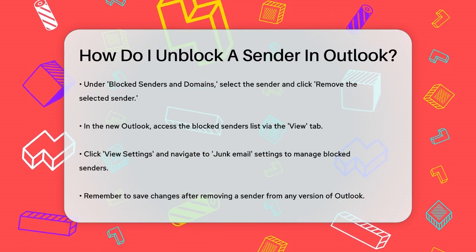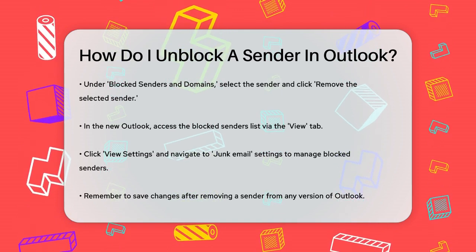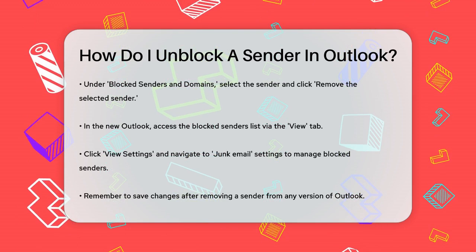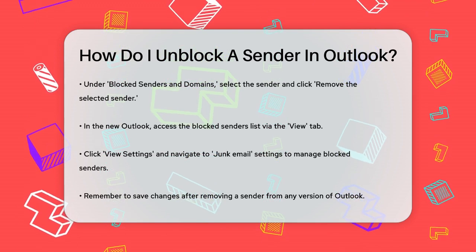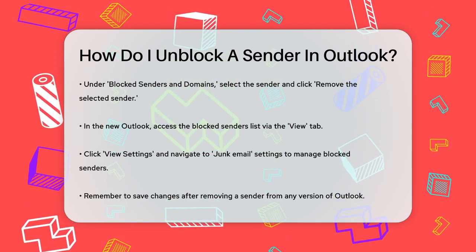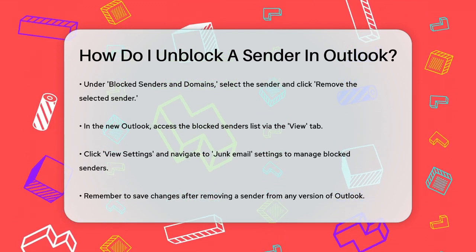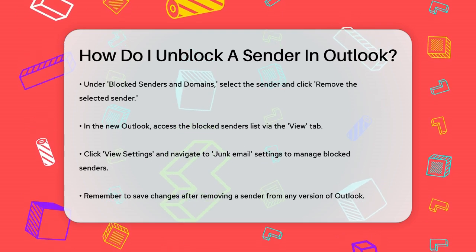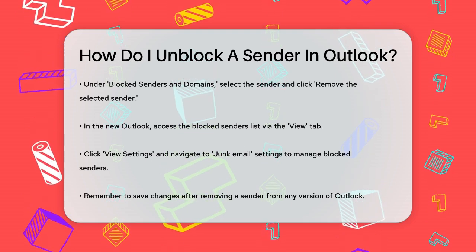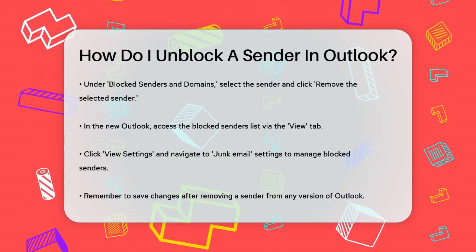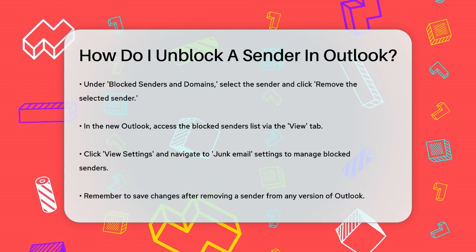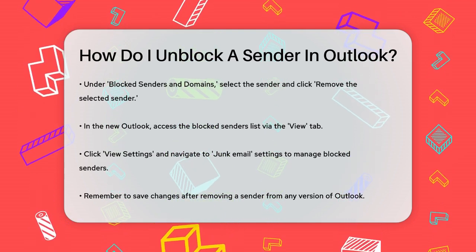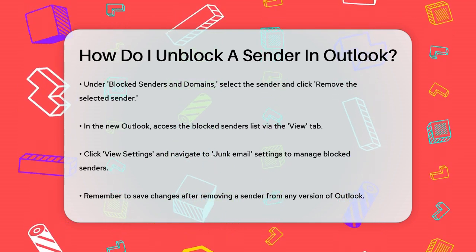Regardless of the version of Outlook you're using, the key is to find the blocked senders list and remove the sender you no longer want to block. This will ensure that their emails are no longer sent to your junk folder and will instead land in your inbox as usual. So if you've accidentally blocked someone or just need to receive emails from a sender again, these steps will help you unblock them quickly and easily.